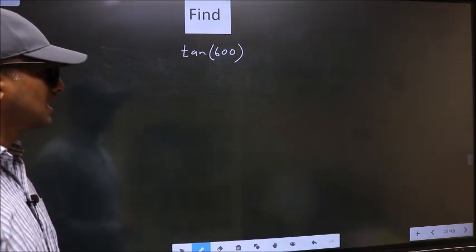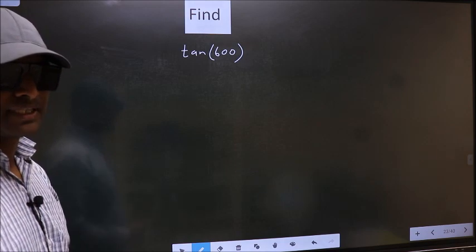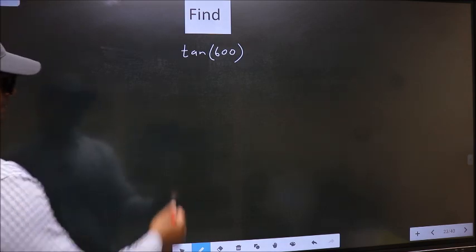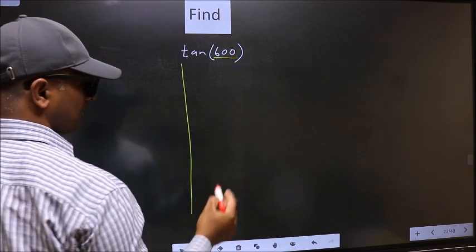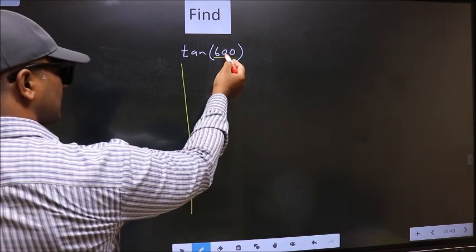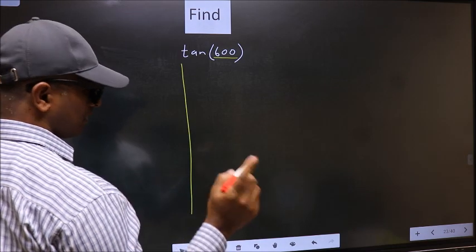To find tan 600°, we should follow this method. Here we have 600°. Now we should check: 600° lies between which two multiples of 180?